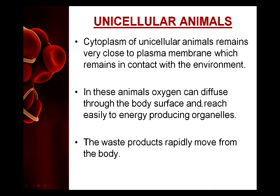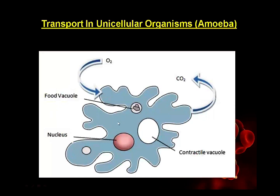Observe the diagram of the amoeba - the cytoplasm is filled inside and is very close to the cell membrane, in contact with the environment. In these animals, oxygen gas comes inside and carbon dioxide goes outside. Gases diffuse through the body surface by the diffusion process and reach the mitochondria.